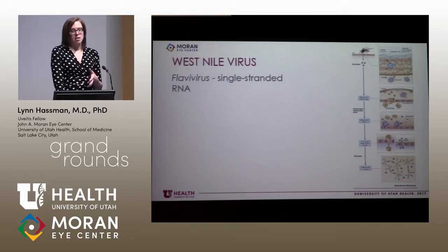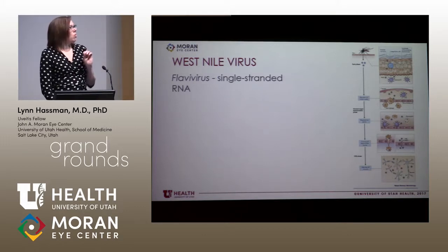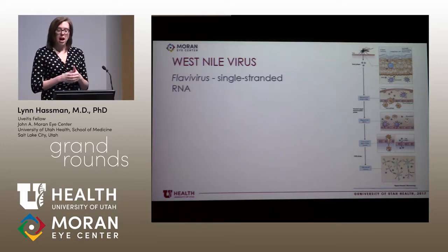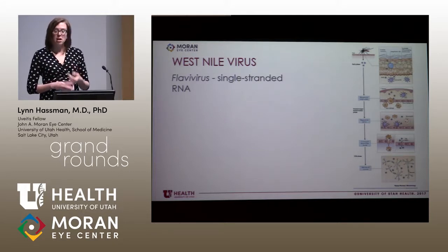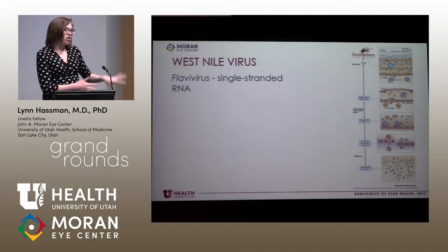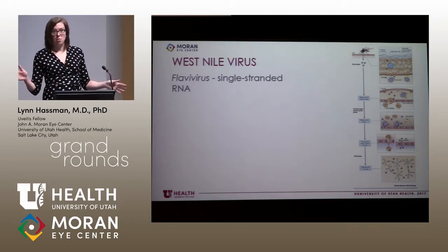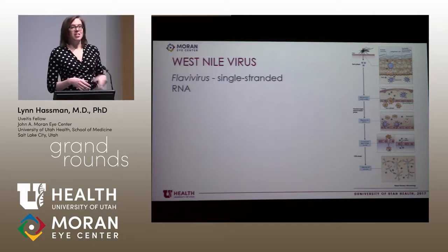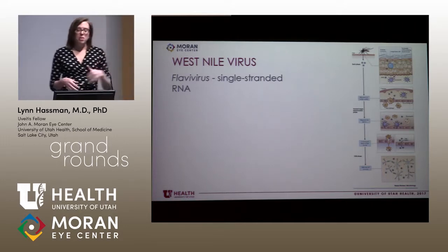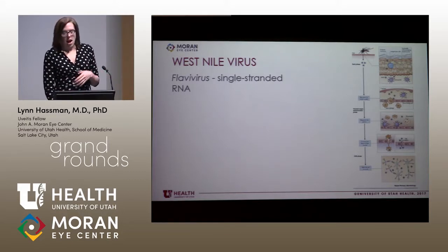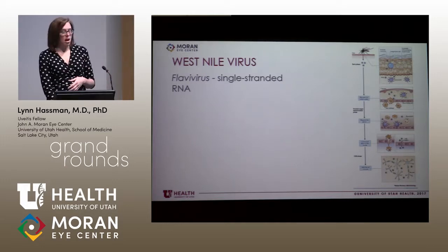West Nile virus is a flavivirus — a single-stranded, small RNA virus. Virions are transmitted through the bite of a mosquito, infect and are endocytosed by local antigen-presenting cells such as tissue-resident macrophages and Langerhans cells, brought to the draining lymph nodes where they infect macrophages, and then disseminated through the blood. The virus has multiple proposed mechanisms of entering the CNS — either as a Trojan horse inside a macrophage through the blood-brain barrier, or via inflammation-induced blood-brain barrier permeability. It can also transport through the CNS via anterograde and retrograde axonal transmission.